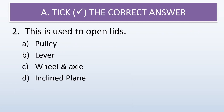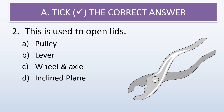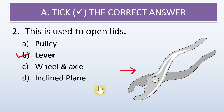Second question: this is used to open lids. The options are pulley, lever, wheel and axle, or inclined plane. The answer is lever. It is the lever that is used to open lids. Here there is an example of a lever.